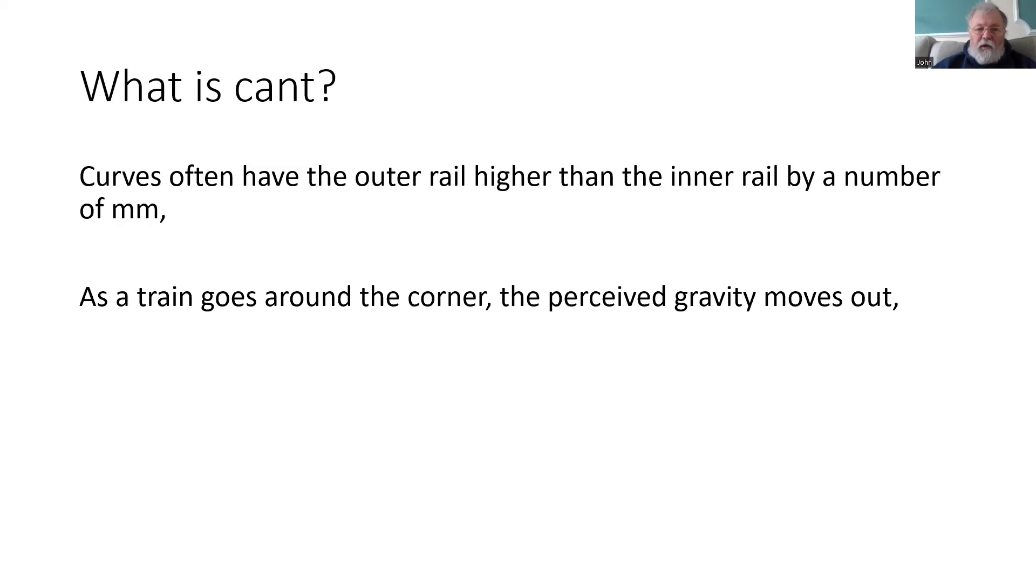As the train goes round the corner, that higher rail means that the train will lean in slightly, and that will counteract the force pushing you out. And the gravity that you feel as a passenger on the train will start to point away from the centre of the curve slightly.